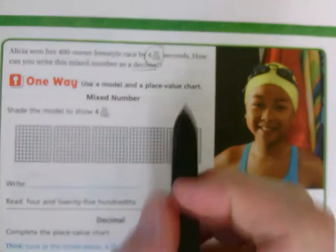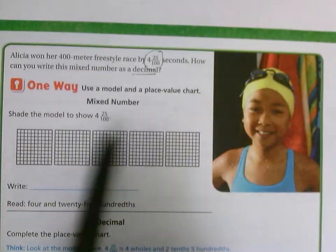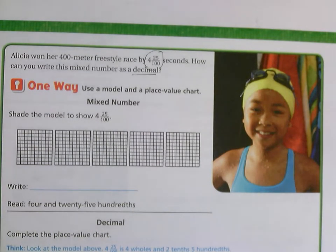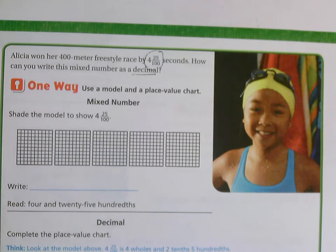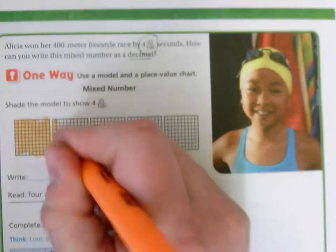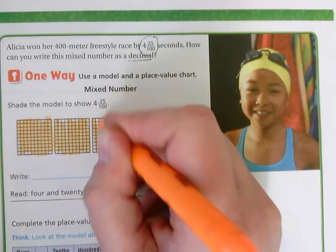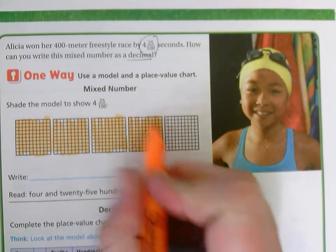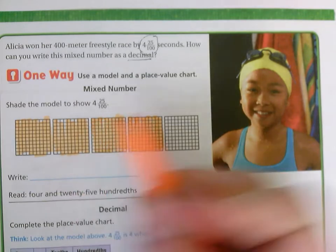One way is we're going to use a model and a place value chart. We're going to shade to show the model four and twenty-five hundredths. Four and twenty-five hundredths means I need to shade in four wholes. I have four in my ones place. So that's one whole, two, three, four — four wholes, four ones — and twenty-five.